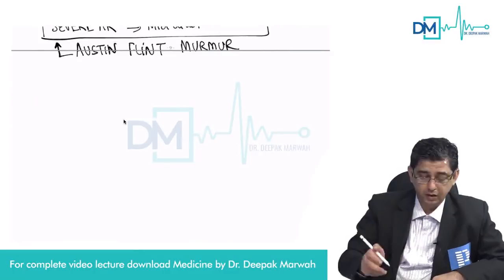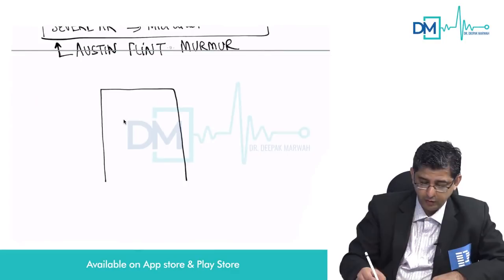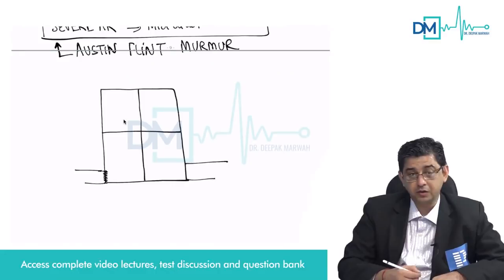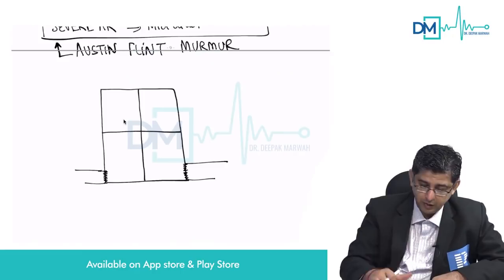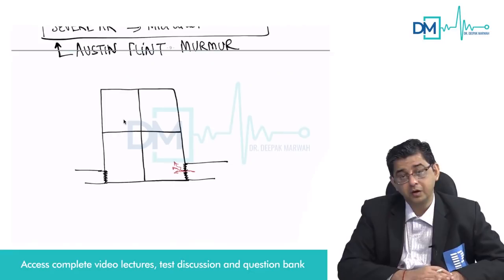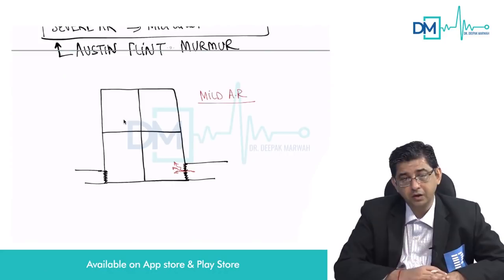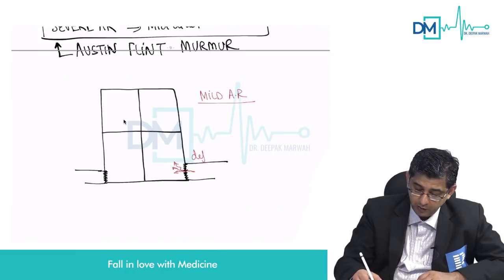Now let's look at mild aortic regurgitation. The pulmonic valve is closing rock solid but the aortic valve is not closing properly, so there is leakage of blood back into the heart — but the amount of blood leaking is very small, perhaps around 5 ml, not a substantially large volume.